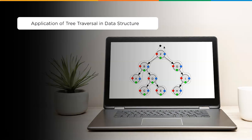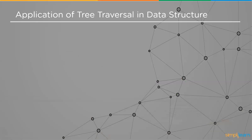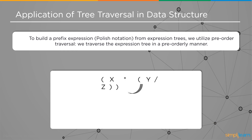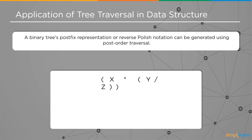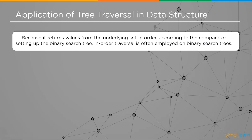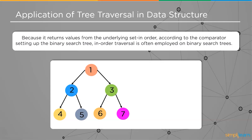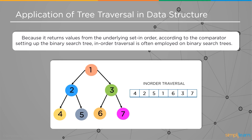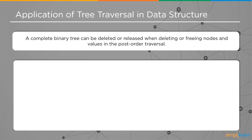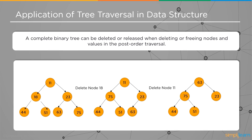Applications of tree traversal in data structure: tree traversal is used to build a prefix expression or Polish notation from expression trees using pre-order traversal. A binary tree's postfix representation or Reverse Polish notation can be generated using post-order traversal. In-order traversal is often employed on binary search trees as it returns values in sorted order. Post-order traversal is also used to delete or release a complete binary tree.